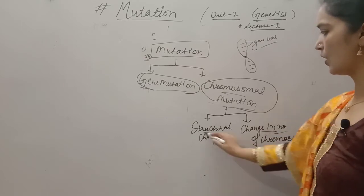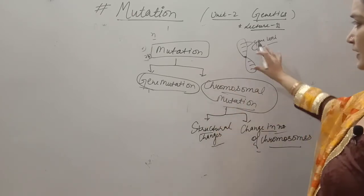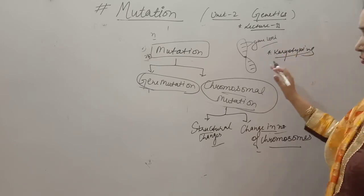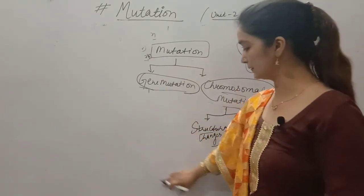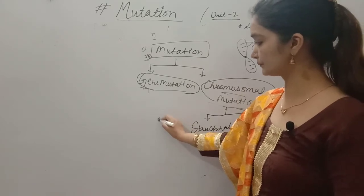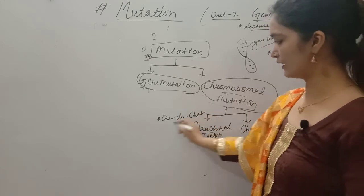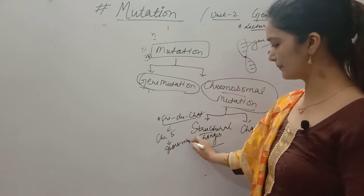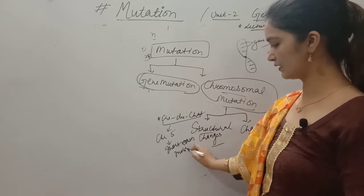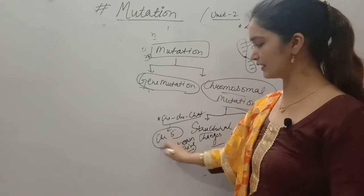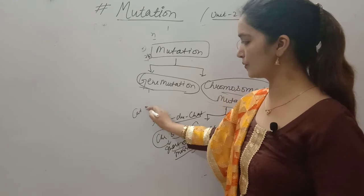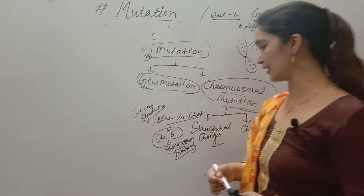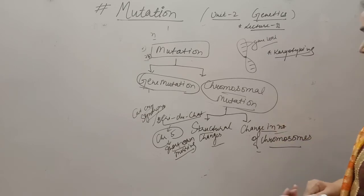Structural changes in chromosomes can cause conditions like Cri-du-chat syndrome. In Cri-du-chat syndrome, the short arm of chromosome number 5 is missing. Because of this, the baby's crying sounds like a cat, which is why it is called the 'cat cry' syndrome.